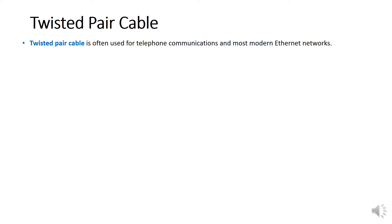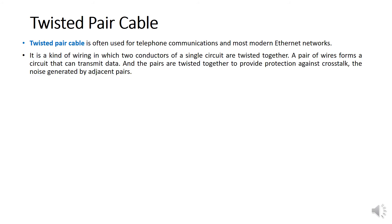Twisted pair cable is commonly used for telecommunication and most modern internet networks. If you are involved in telecommunication server cabinets, you will understand the purpose of twisted pair cable. It is a type of wiring in which two conductors of a single circuit are twisted together. A pair of wires forms a circuit that can transmit data, and the pair is twisted together to provide protection against crosstalk and noise generated by adjacent pairs.